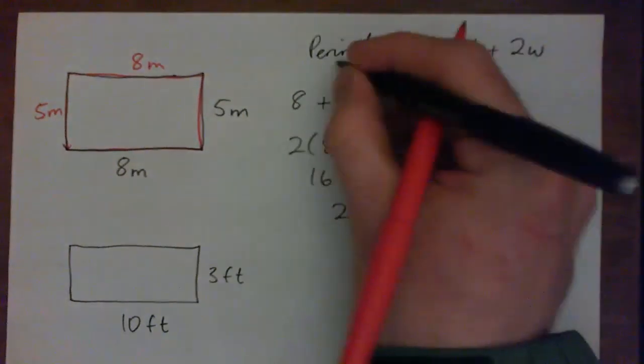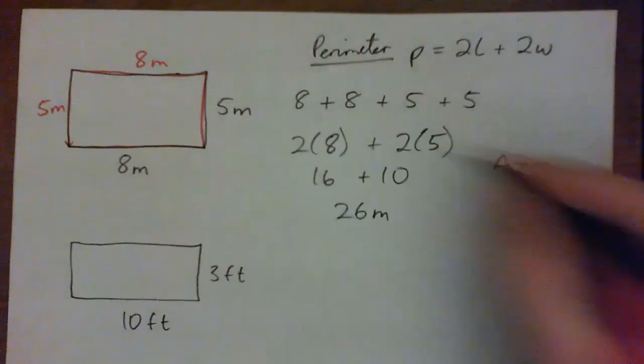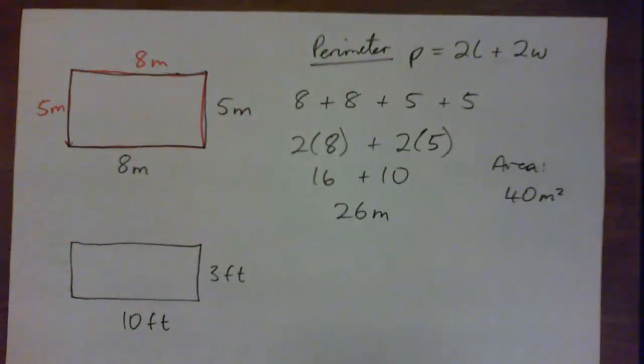That's the perimeter. And again, the area, by the way, would be where you multiply them. You go 5 times 8 is 40 square meters, meters squared.